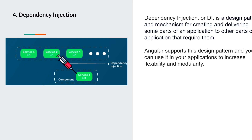Dependency injection (DI) is a design pattern and a mechanism for creating and delivering parts of an application to other parts that require them. For example, if you have a component and a service with multiple API calls, and you want that service used in multiple components, dependency injection lets you import that service inside a component and access the APIs written in the service.